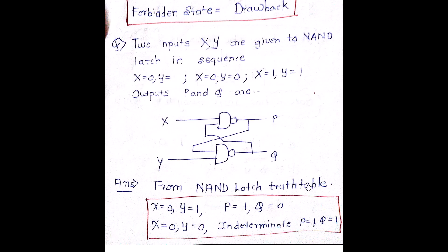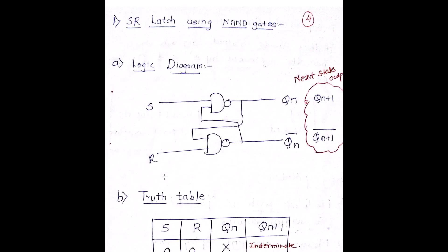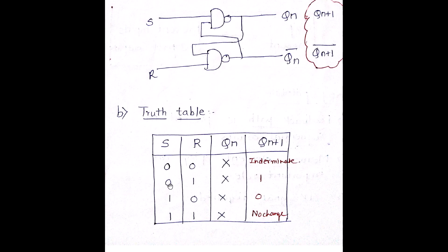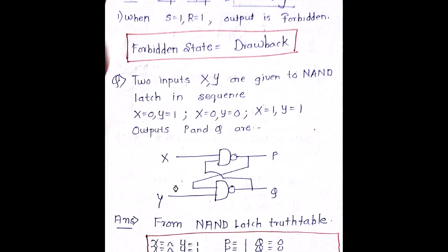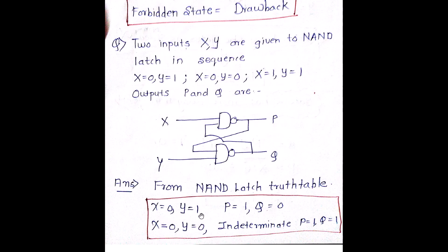From the NAND latch truth table, when X=0 and Y=1 — they have just converted S and R to X and Y — when it is 0 and 1, my output is going to be 1 and 0. That is the standard truth table output. So when X=0 and Y=1 for a NAND latch input, my output is going to be P=1 and Q=0. And when X=0 and Y=0, my output is basically indeterminate.